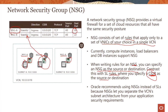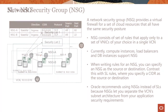Our recommendation is to use network security groups, for the precise reason just discussed. When you use network security groups, you can separate the VCN subnet architecture from your application security requirements. As shown in the diagram, both instances are in the same subnet but have different security requirements — so NSGs give you more flexibility.